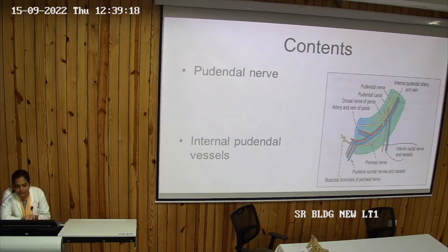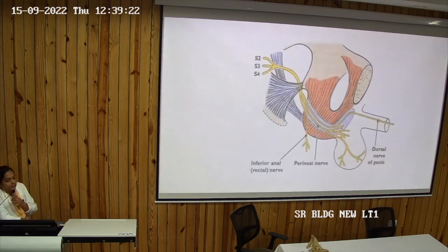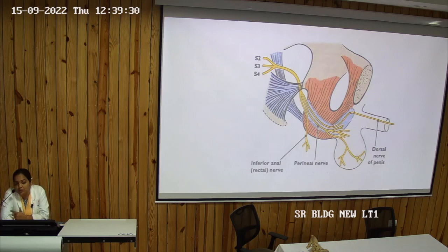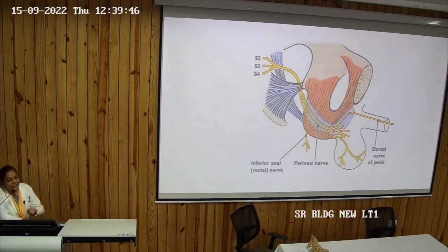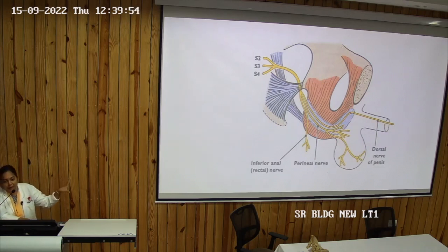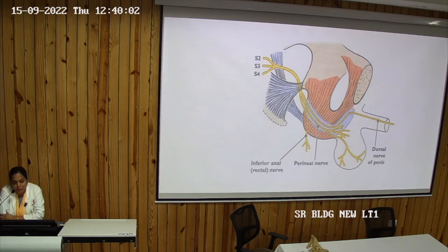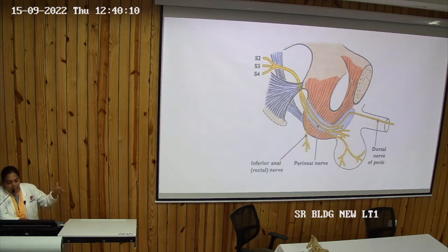The pudendal nerve is the main supply of the perineum. It is formed from the sacral plexus by the anterior primary rami of S2, S3, and S4. It enters the pelvic region through the greater sciatic foramen, passes near the dorsal part of the ischial spine, and enters the pudendal canal — supplying the perineum. Throughout its course, posteriorly it gives the inferior rectal nerve (anal nerve) which supplies the perianal area. Its two important branches are the perineal nerve and the dorsal nerve of the penis.